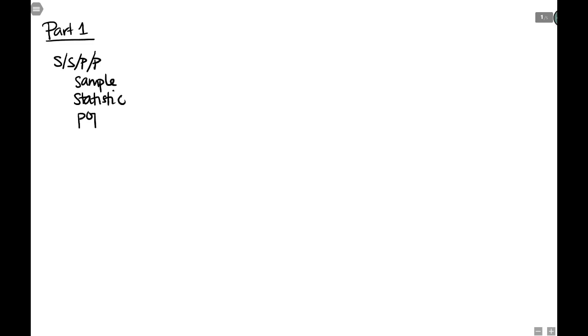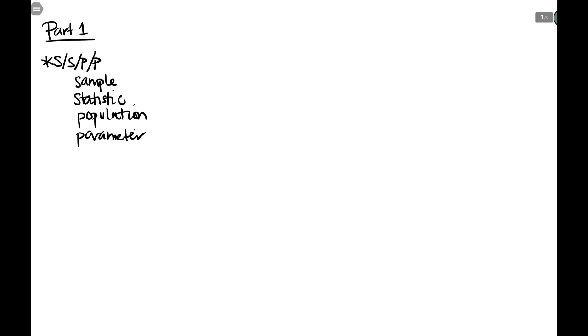Let's go through each part and talk about what was important. In part one we had a lot of definitions, so this section is going to be very heavy on multiple choice, as you saw with the homework. The first set of definitions is called SSPP — sample, statistic, population, and parameter. This is going to be on the exam for sure, all four of these definitions.